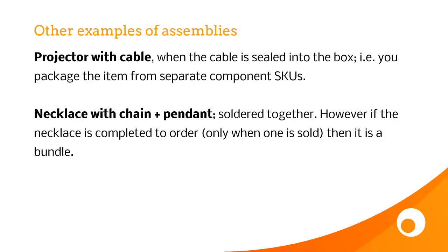Other examples of assemblies include a projector with a cable, but only when the cable is actually built or sealed into the box. If you combine the cable with the projector at the point of sale — when someone checks out online or when you pack it — then it's a bundle. It's only an assembly when you're sealing it together in the box so that people can't buy the cable separately anymore.